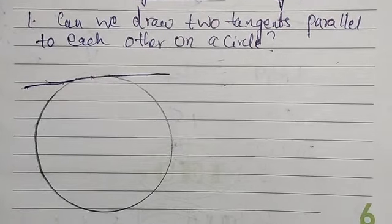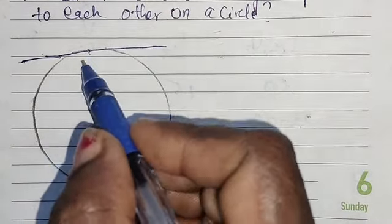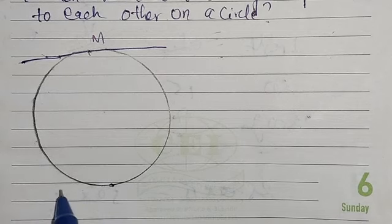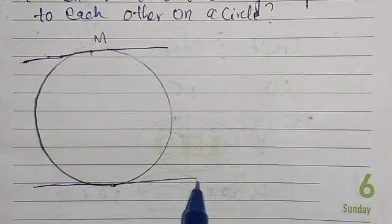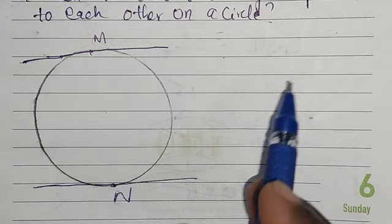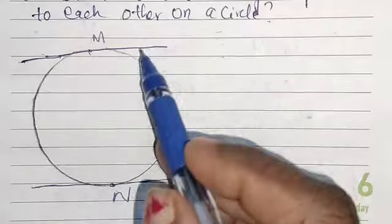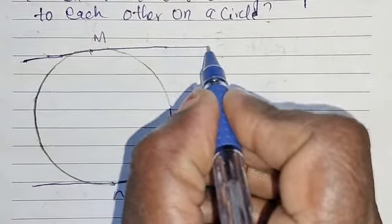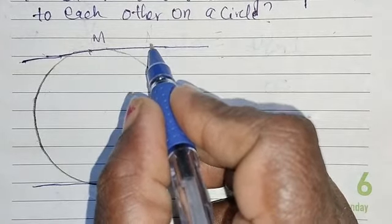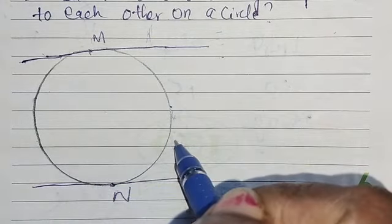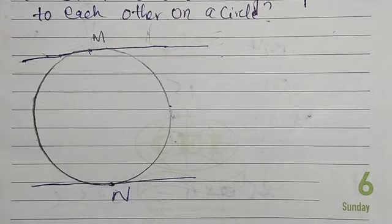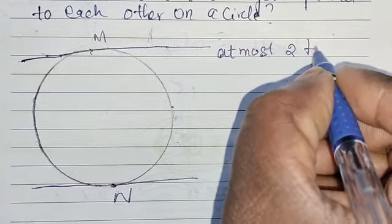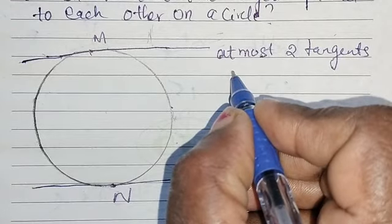So, can we draw two tangents parallel to each other on a circle? If you draw a circle, you can draw tangents — one here and one here — two tangents parallel to each other. At most, two tangents only are possible.